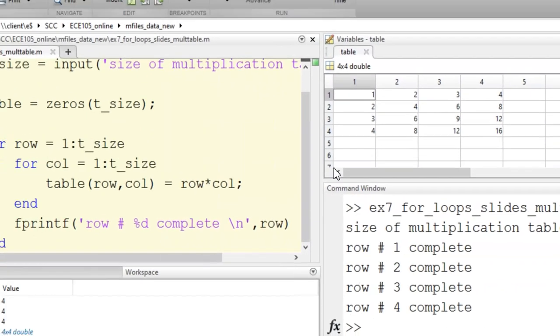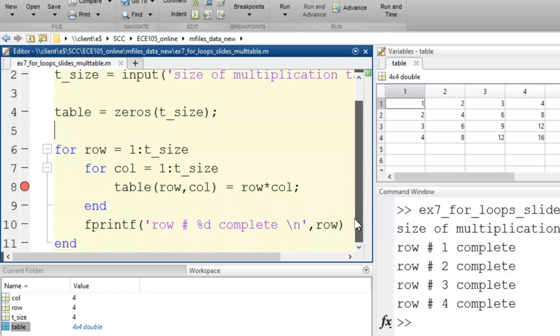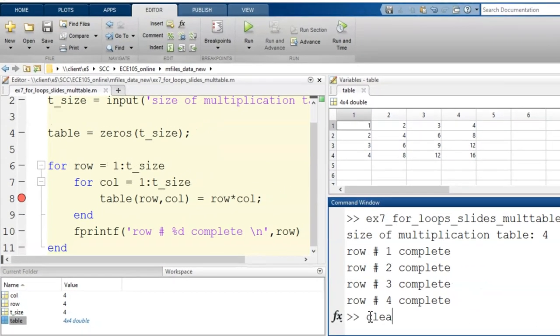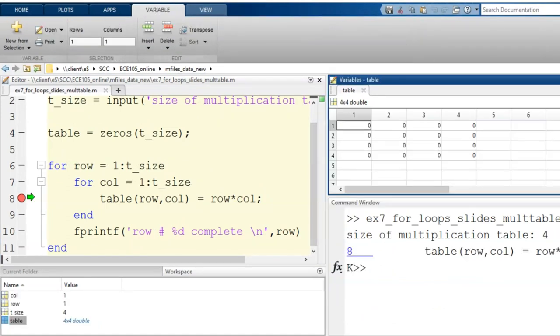Now, I will use a debugging tool called a breakpoint to allow us to move step-by-step through the loops. By clicking on the dash next to the code line number, a red breakpoint appears. This means that every time the code reaches this line, it will pause before processing. I run the script and enter a size of 4 like before.